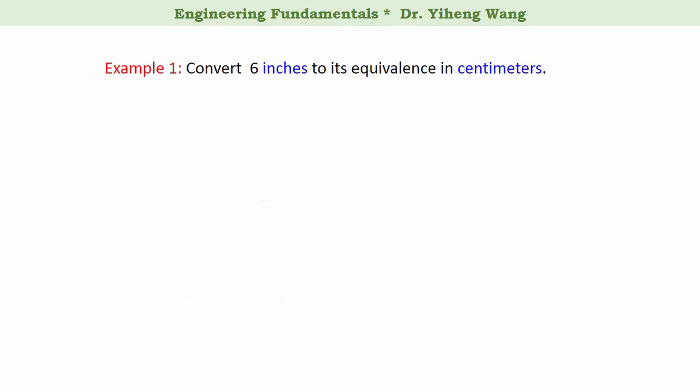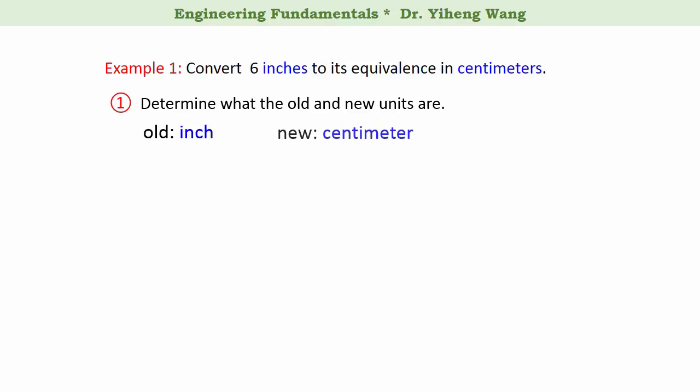Let's look at this example. We need to convert 6 inches, a quantity of length, to its equivalent quantity in centimeters. Although it is a quite simple example, we are still going to follow the four-step procedure described previously. First step: determine the old and new units. The old unit is inch, and the new unit is centimeter.